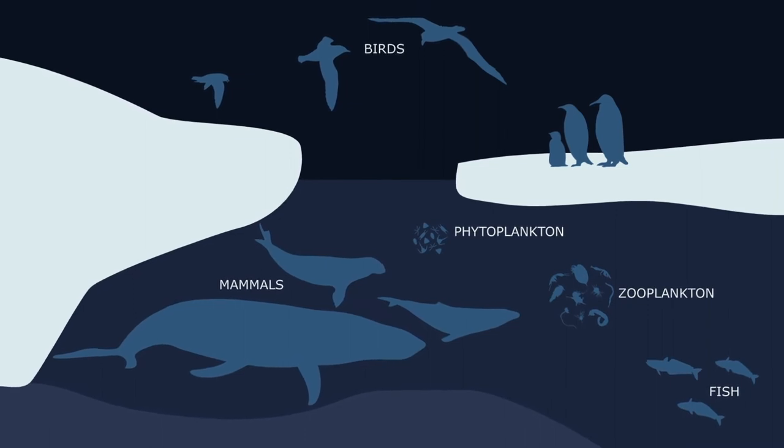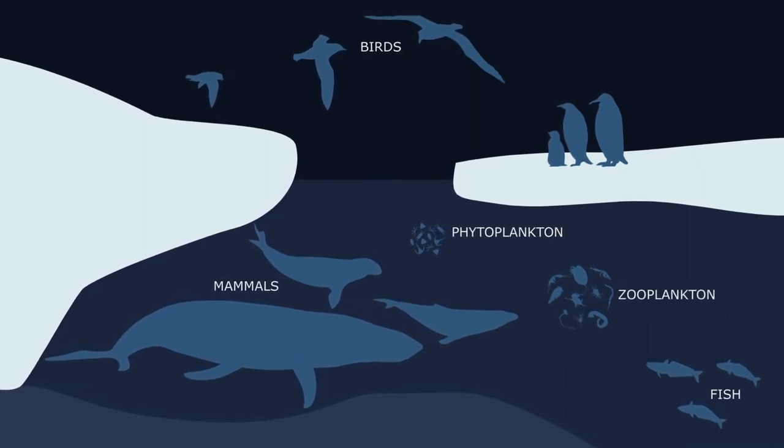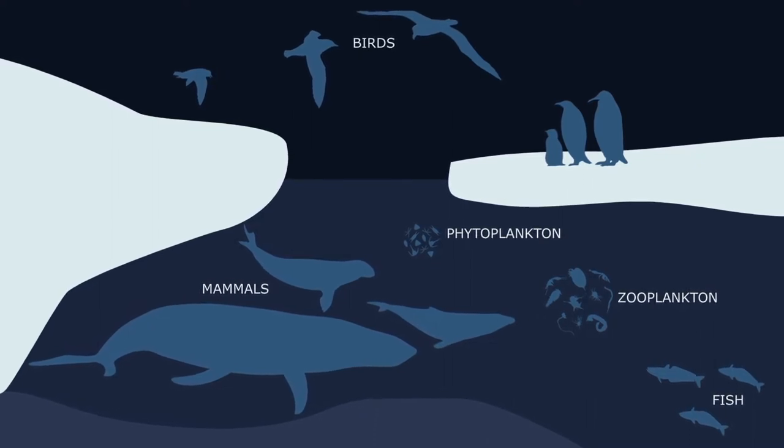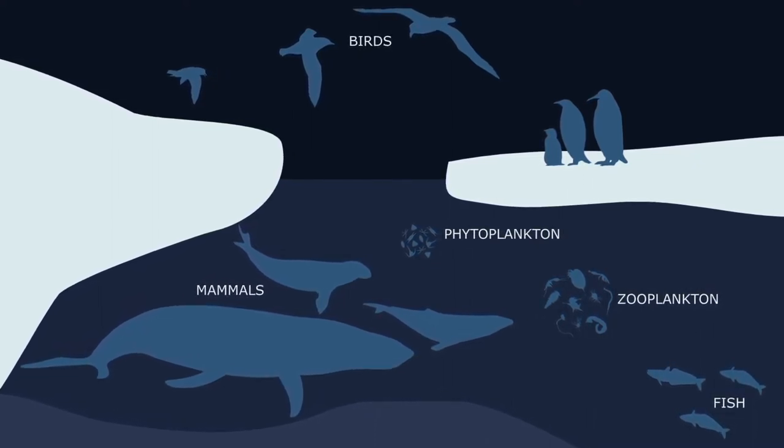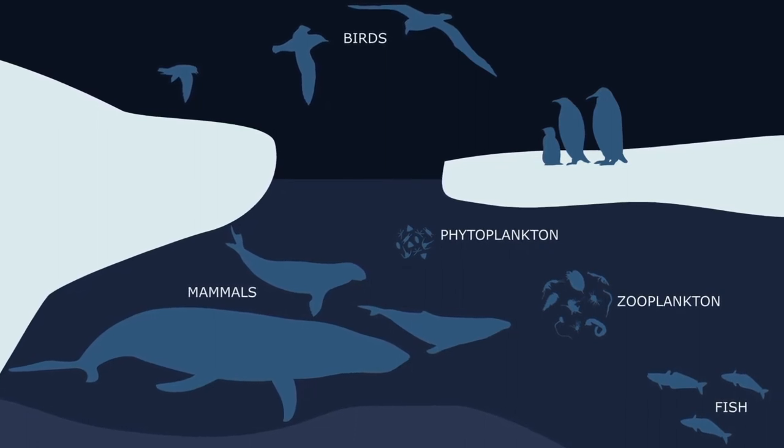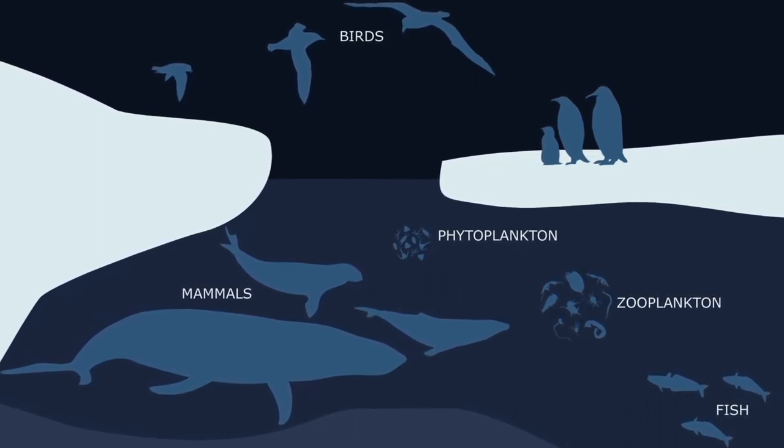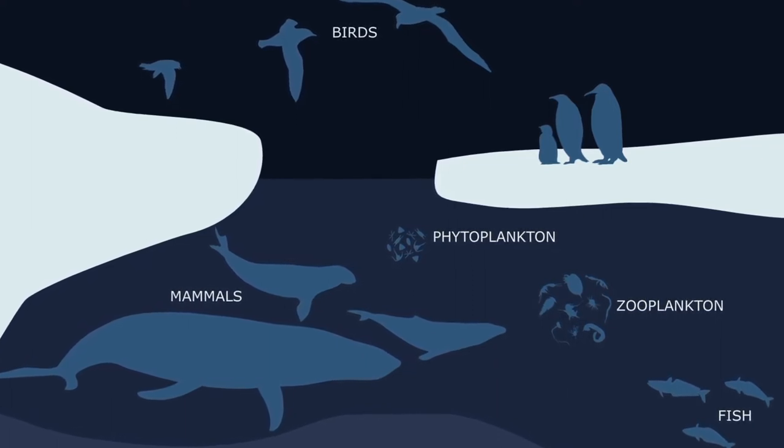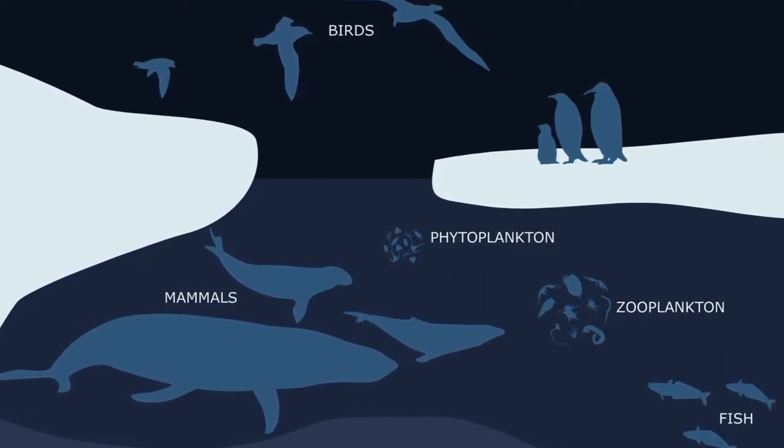The polynia food chain starts with phytoplankton, such as marine algae. These tiny cells of plants live throughout the ocean, form the main source of food for zooplankton, krill, copepods and other small animals that are consumed by fish and other larger animals.